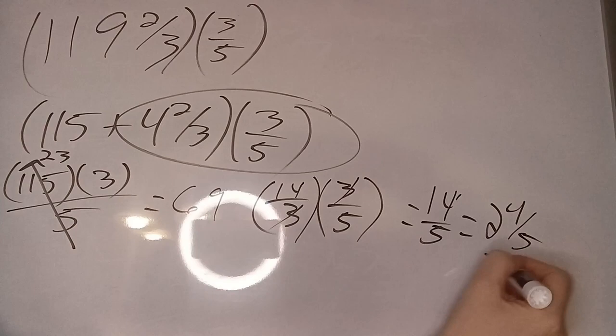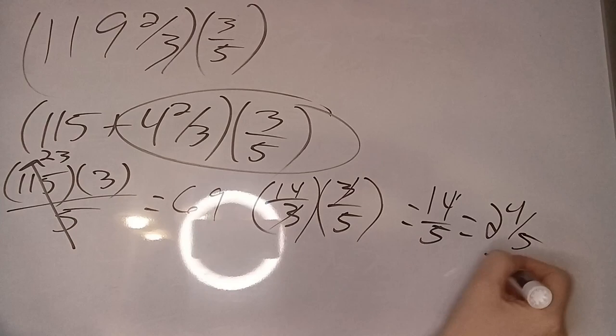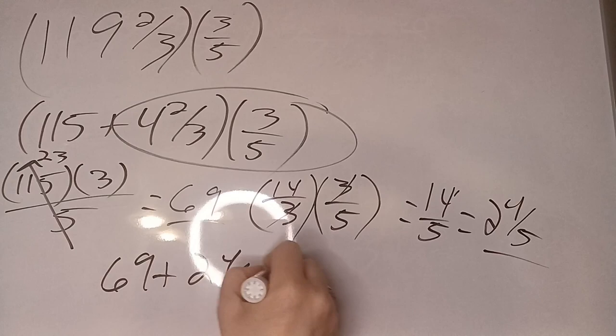2 and 4/5 plus 69. It's going to give us 71 and 4/5.